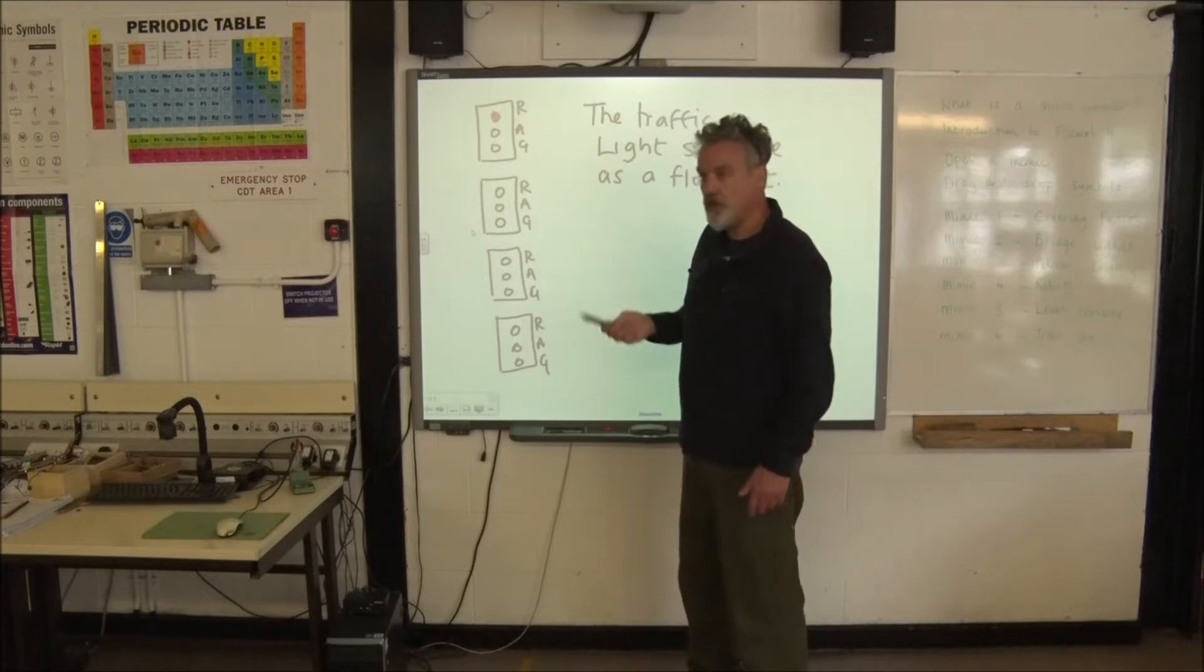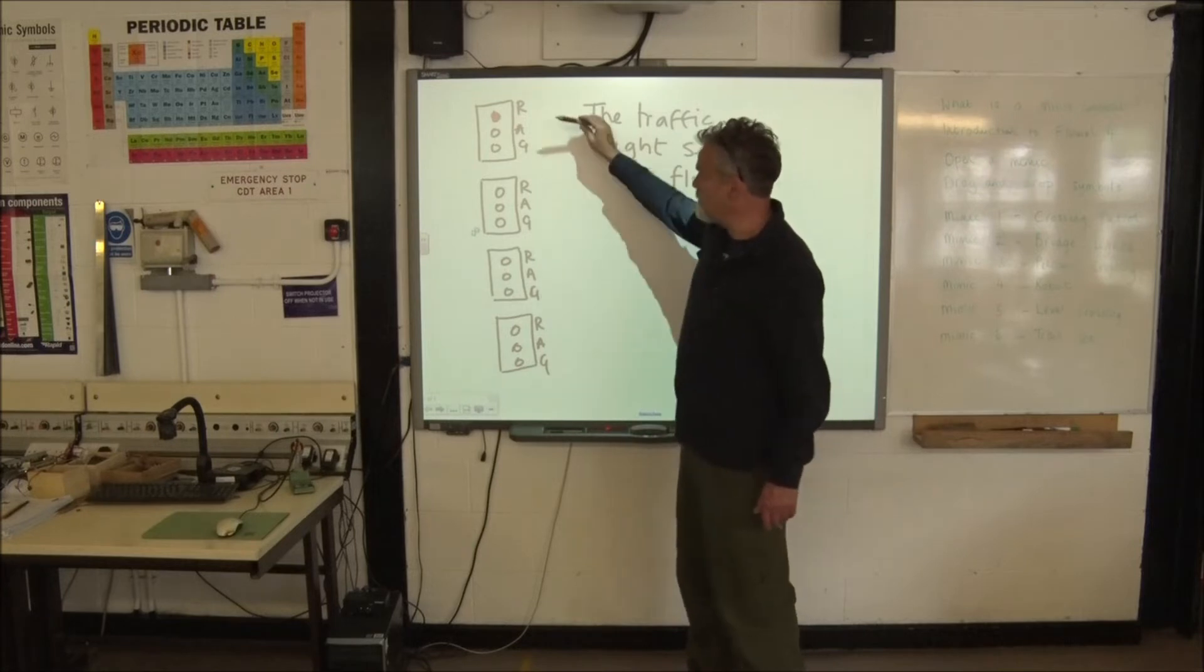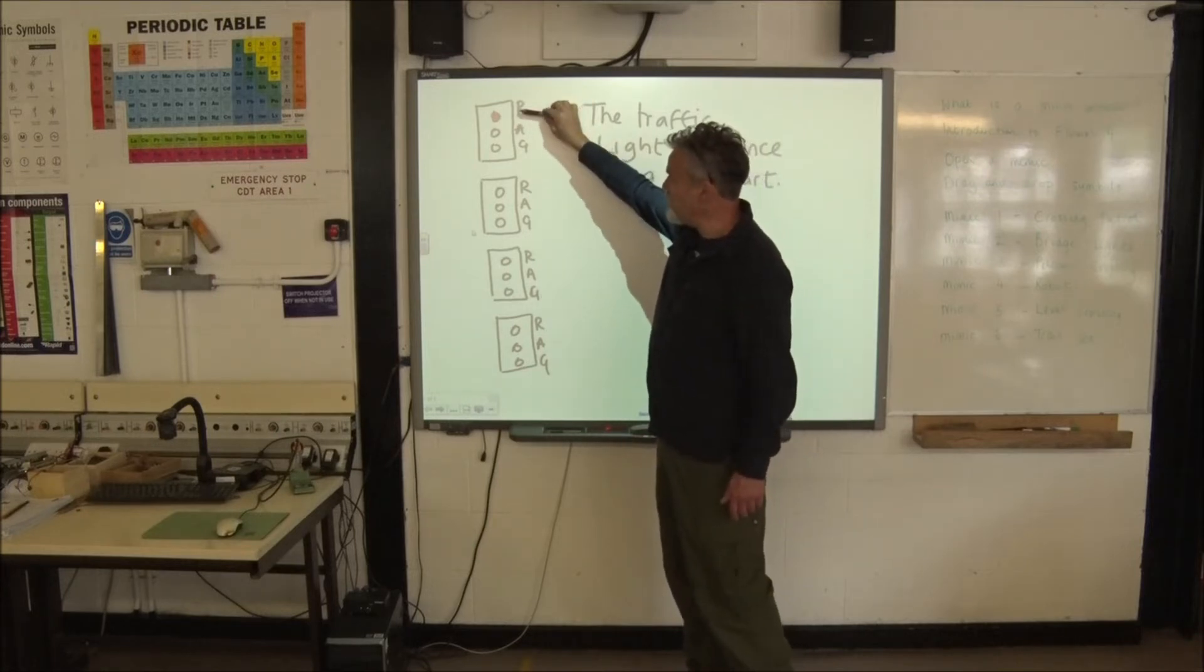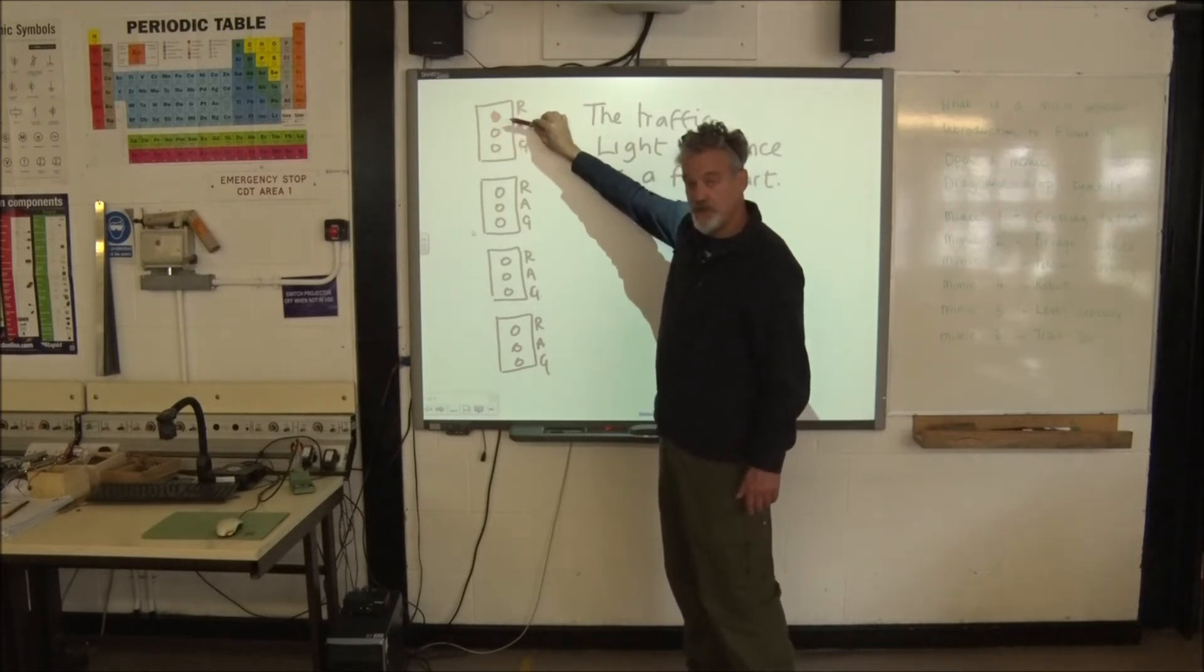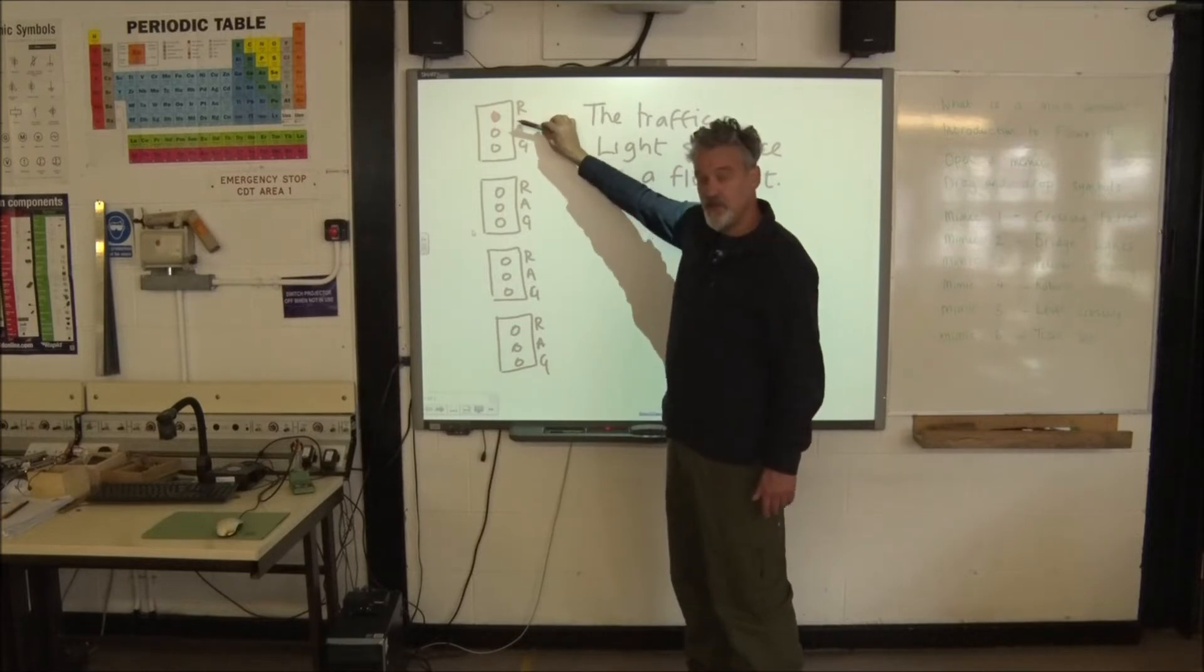Now I don't have an amber colour pen so I'm going to have to use just black for that I'm afraid. But I have coloured in the red light on the first traffic light to show you that this light is currently at stop.